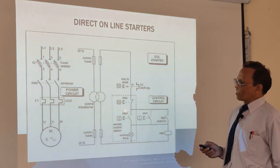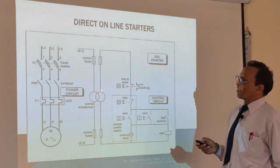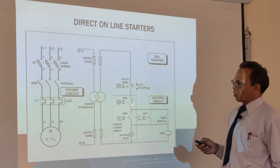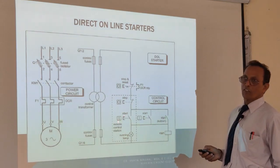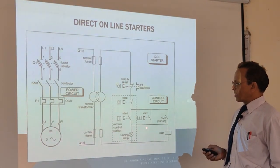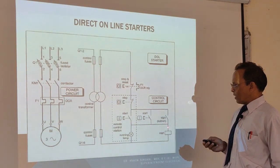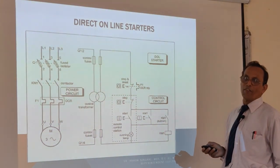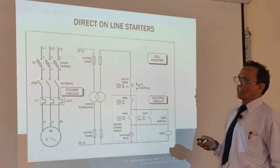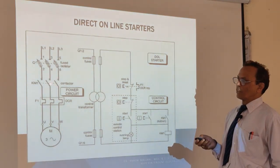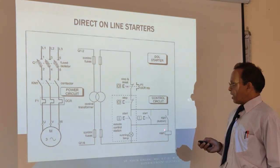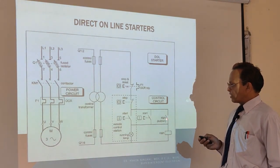When you press the start button, power comes from here through the stop reset button, through the stop button, and through this — the lamp gets on, showing motor indication. Then power comes through the KM1 coil and KM1 gets energized. So KM1 energizes, the contactor is pulled in, and your 440 volt contacts are made. Your motor starts rotating.